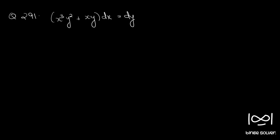Question number 291: x cube y square plus xy into dx is equal to dy. First we will rearrange: dy by dx is equal to x cube y square plus xy.